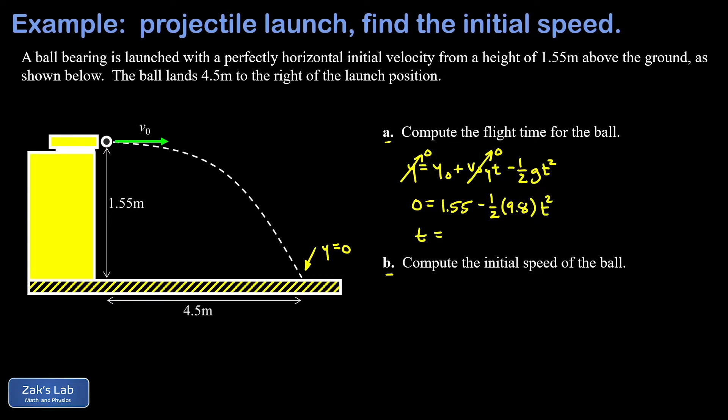All we have to do to solve for that is subtract 1.55 from both sides, divide by the coefficient of T squared, and then square root the result. And when I run the numbers on this, I get 0.562 seconds for the flight time.